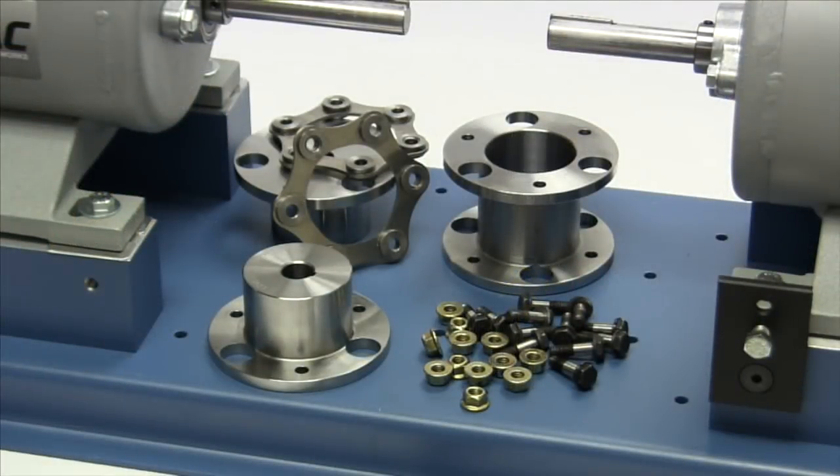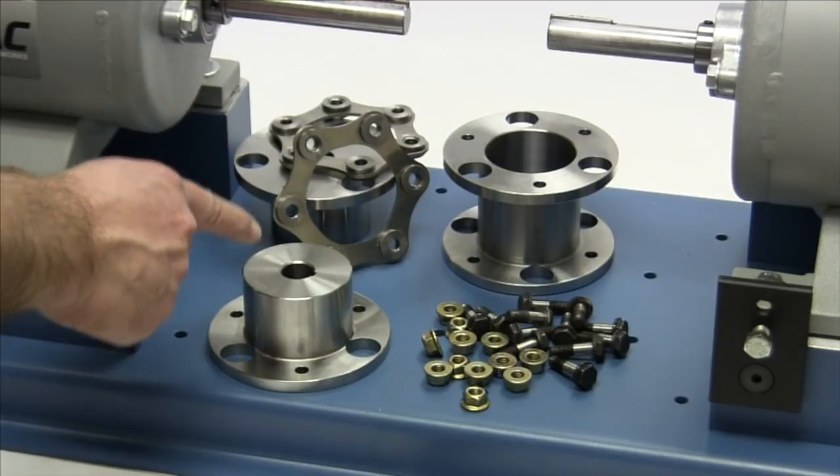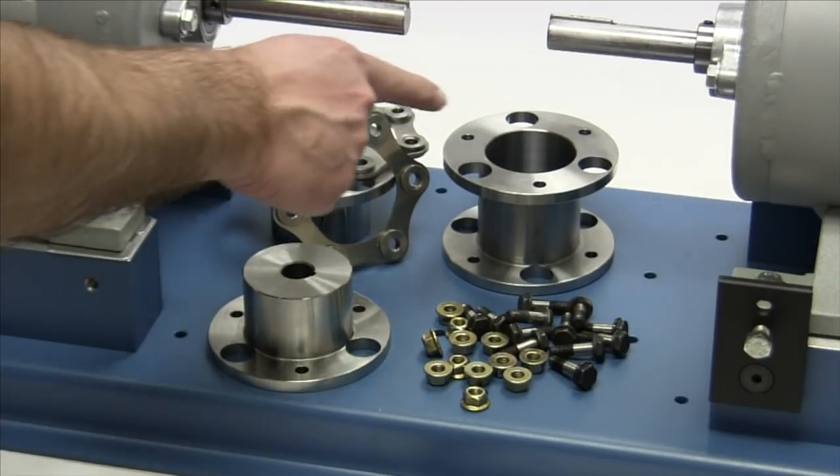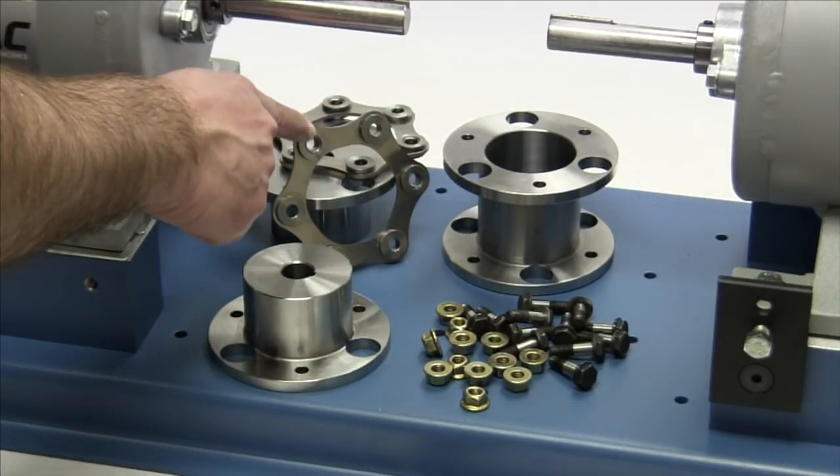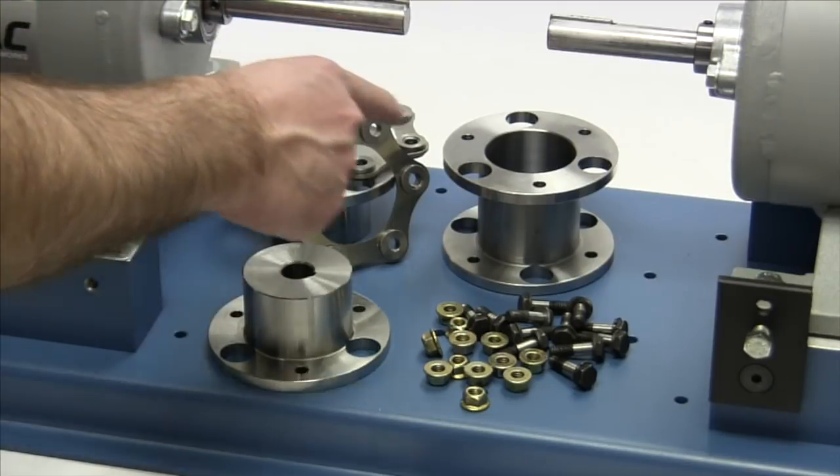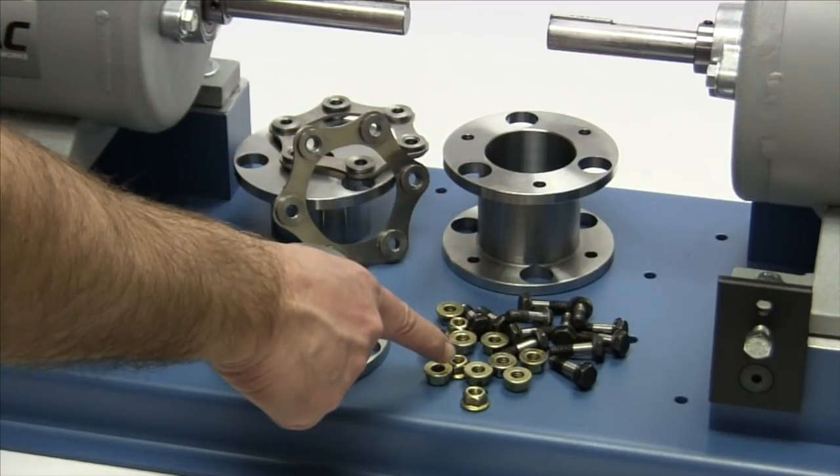The following components are provided with the purchase of your Lovejoy SX style disc coupling. You should have two standard SX hubs, an SX spacer, two unitized disc packs, and the special disc pack bolts with lock nuts.